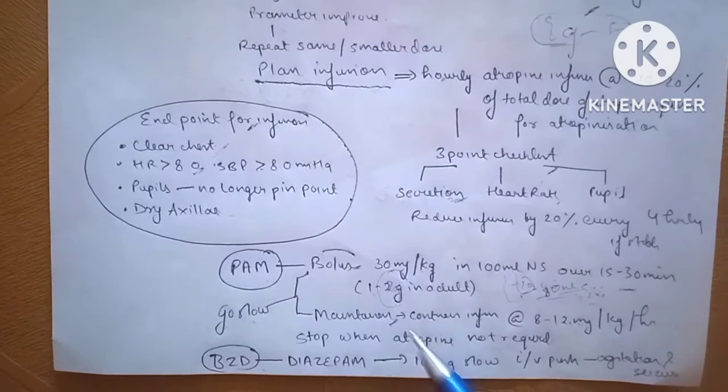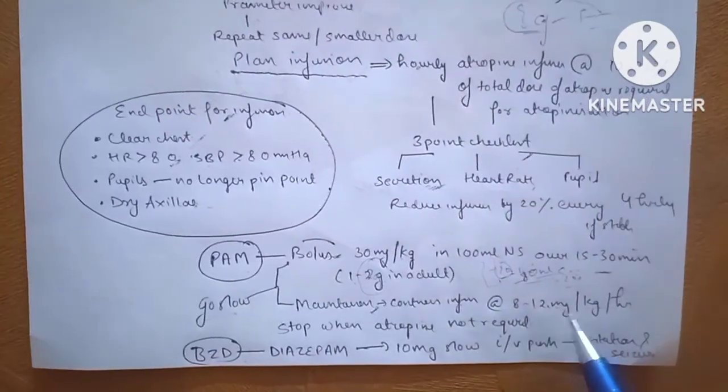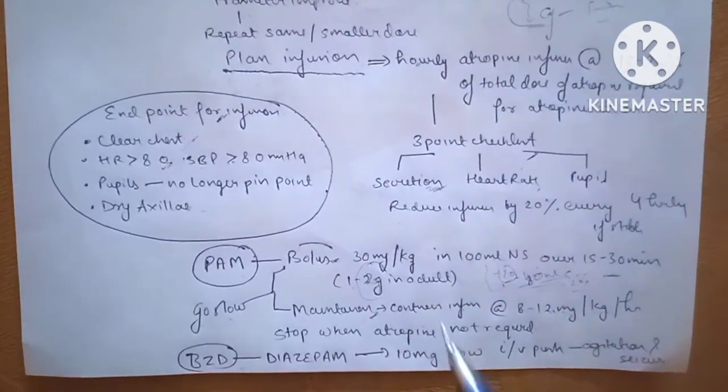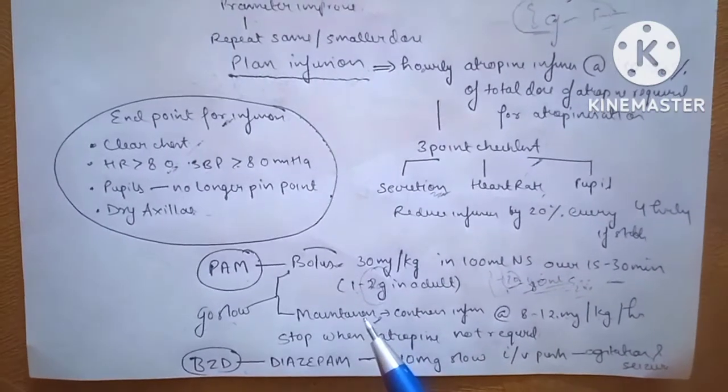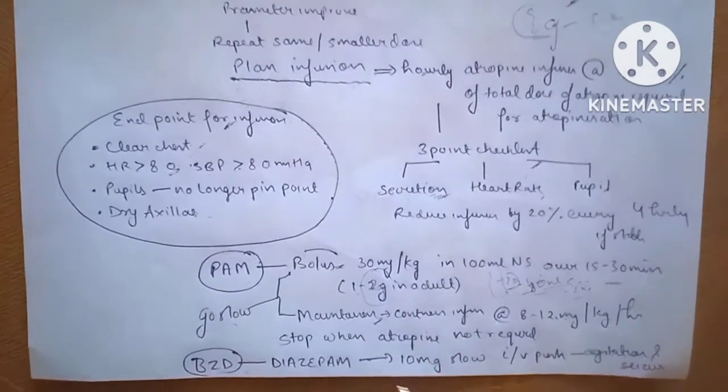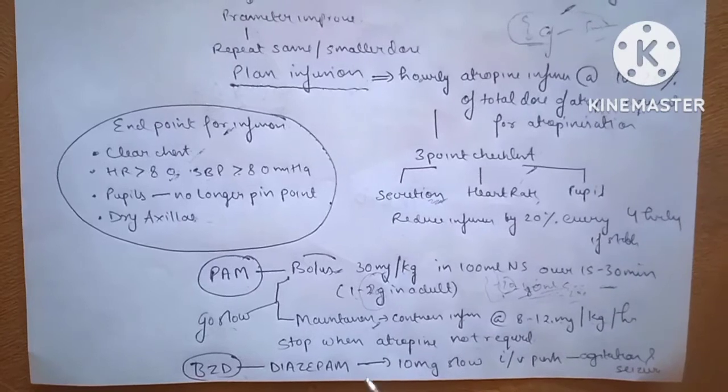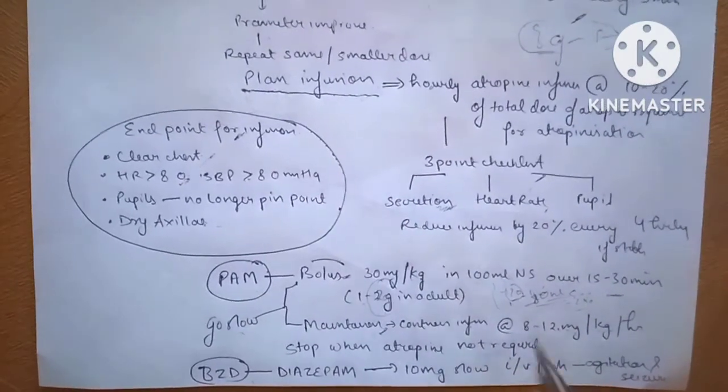The maintenance dose is continuous infusion with 8 to 12 mg per kg per hour. Both bolus and maintenance dose of PAM are given very slowly because they may induce arrhythmias in patients. The PAM is again stopped when the atropine infusion is stopped.